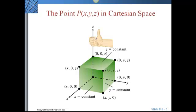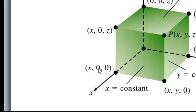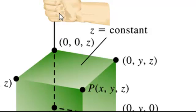If you hold your right hand in a fist with your fingers curving from the positive x-axis toward the positive y-axis, your thumb points in the direction of the positive z-axis. Points on the axes take the form (x, 0, 0) for a point on the x-axis, (0, y, 0) for a point on the y-axis, and (0, 0, z) for a point on the z-axis.